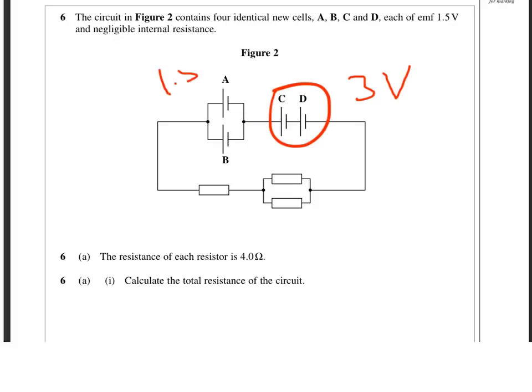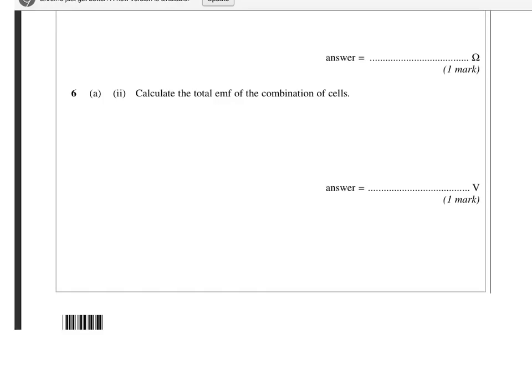So we've got 1.5 volts there. So the voltage between that point and that point is 1.5. The voltage between that point and that point is 3. So that gives us a total of 4.5 volts. So we can write that in here. We've got 1.5, which is the parallel combination, plus 3, which is the series combination, giving us a total of 4.5 volts.